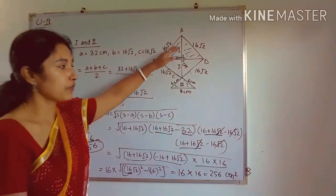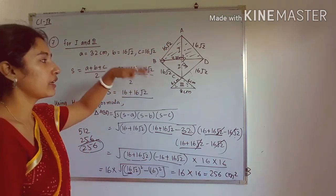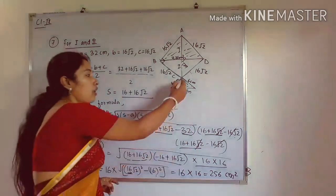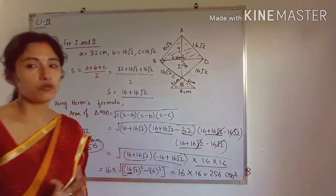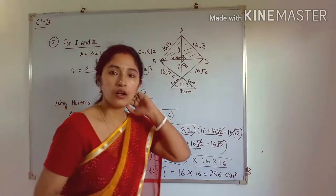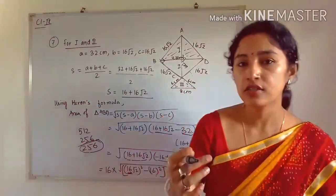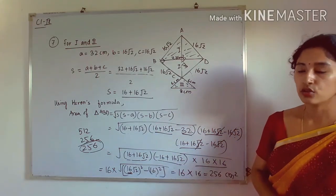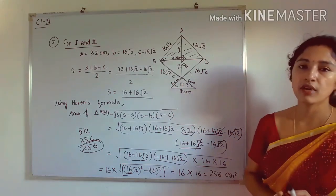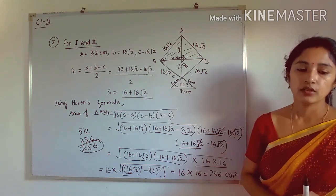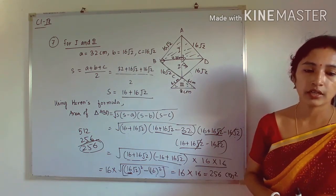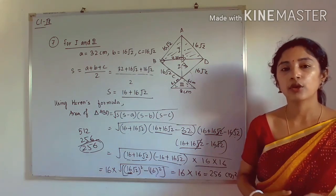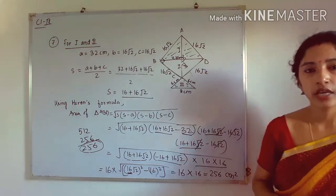The area of shade 2 is also 256 cm², since it equals shade 1. You still need to find the area of shade 3 using the same Heron's formula approach. Please try to do the remaining questions, and I will take a doubt class where you can ask your questions. Thank you, students.